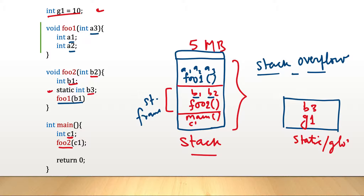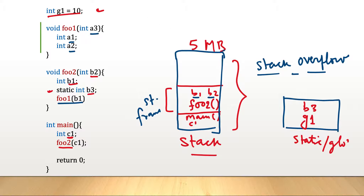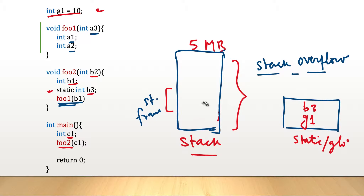Now let's see what happens when functions complete. When foo1 completes, it will return and its stack frame will be freed. Now foo1 has completed execution and foo2 has the value returned by foo1. After some time, foo2 will also complete execution and be popped out of the stack. Then main resumes, and finally main will also complete execution, leaving the stack frame empty. When the program terminates, the global and static section is also freed.